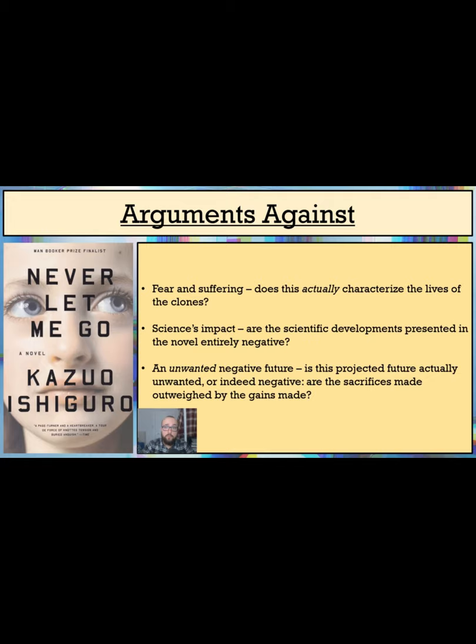Or the numerous breakthroughs made in stem cell science at the turn of the millennium, and then took them to negative or pessimistic places in order to create the story world of Never Let Me Go, and maybe even one of the perils of scientific development. But the question remains, is the future that Ishiguro creates actually unwanted, or all that negative?